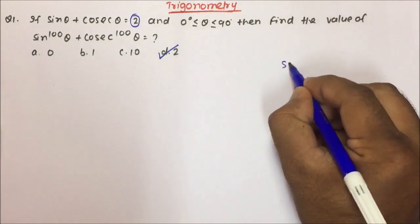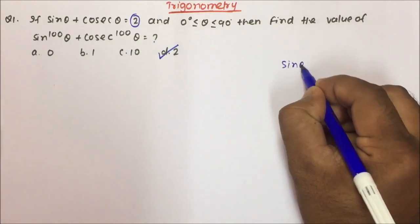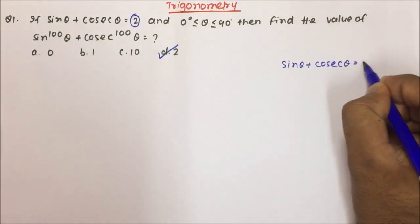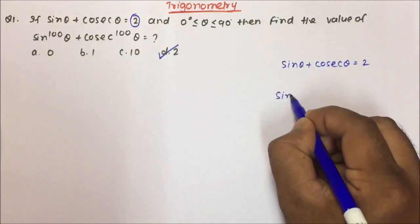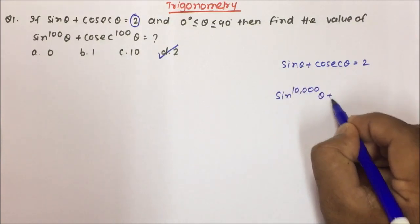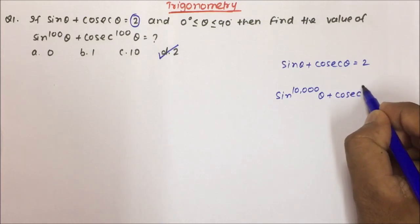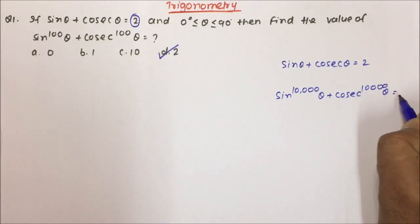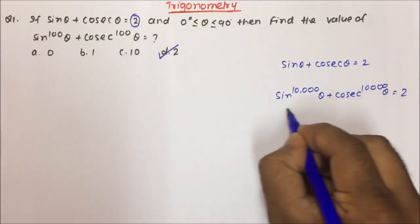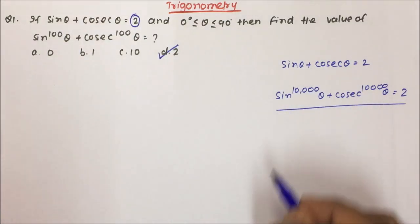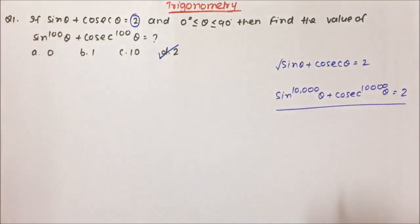Now, if sin θ + cos θ = 2 and you are asked sin¹⁰⁰⁰⁰θ + cos¹⁰⁰⁰⁰θ, then also your answer will be 2. Let us understand the logic behind that, and using that logic you will be able to do the question just in seconds.